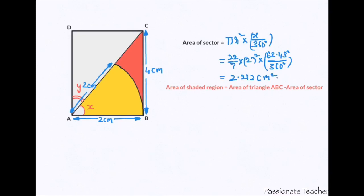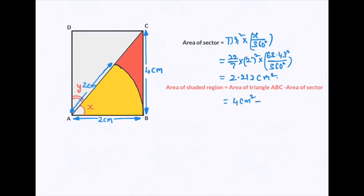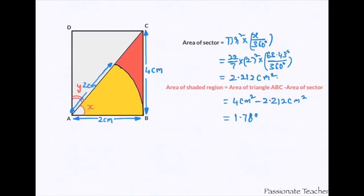Therefore, the area of the shaded region — the red colored portion — equals area of triangle ABC, which is 4 cm², minus area of the sector, which is 2.212 cm². The final answer is 1.788 cm². If you like this question, please subscribe to my channel where you can find more logical questions like this.